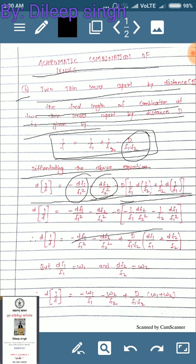Continuing the mathematics: we get −df₁/f₁² − df₂/f₂² minus D times the differentiated terms. When you differentiate 1/f₂ you get df₂/f₂², and similarly for 1/f₁ you get df₁/f₁². So d(1/f) = −df₁/f₁² − df₂/f₂².